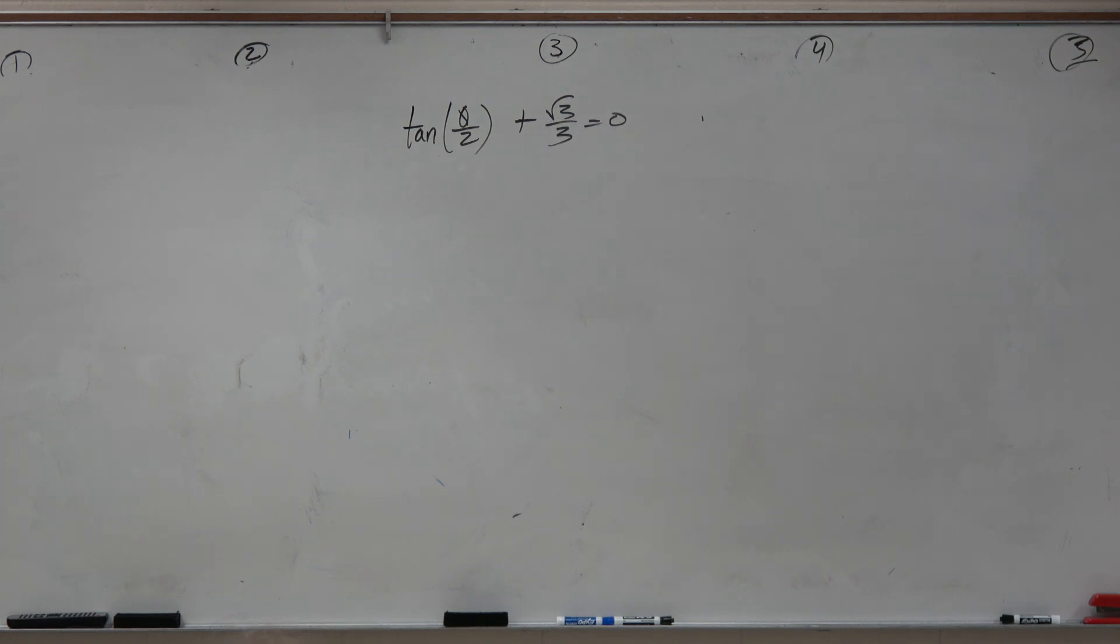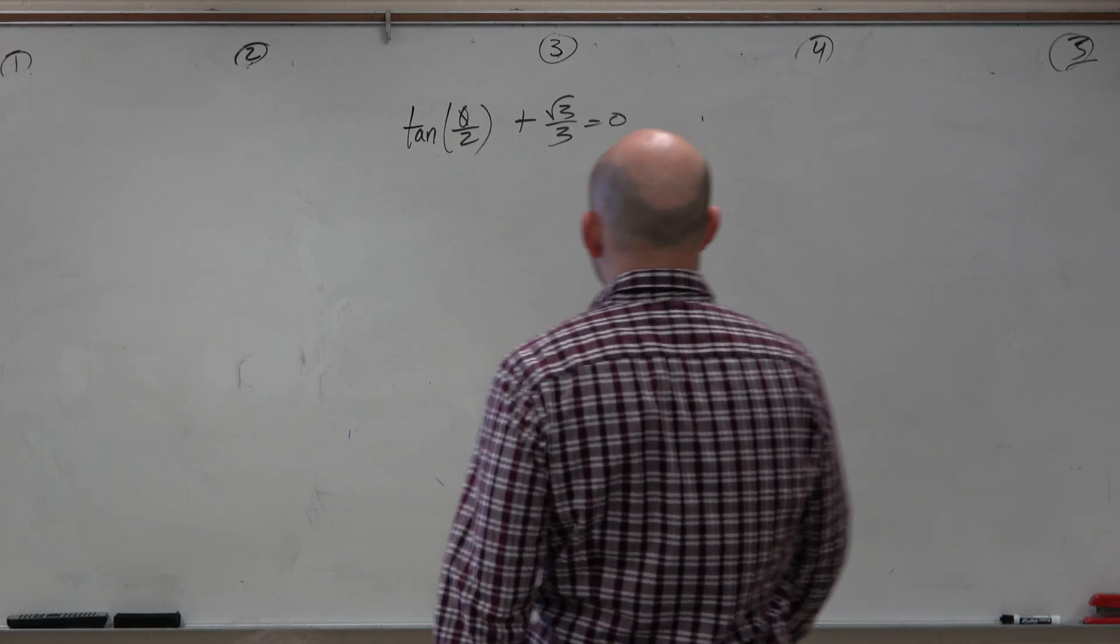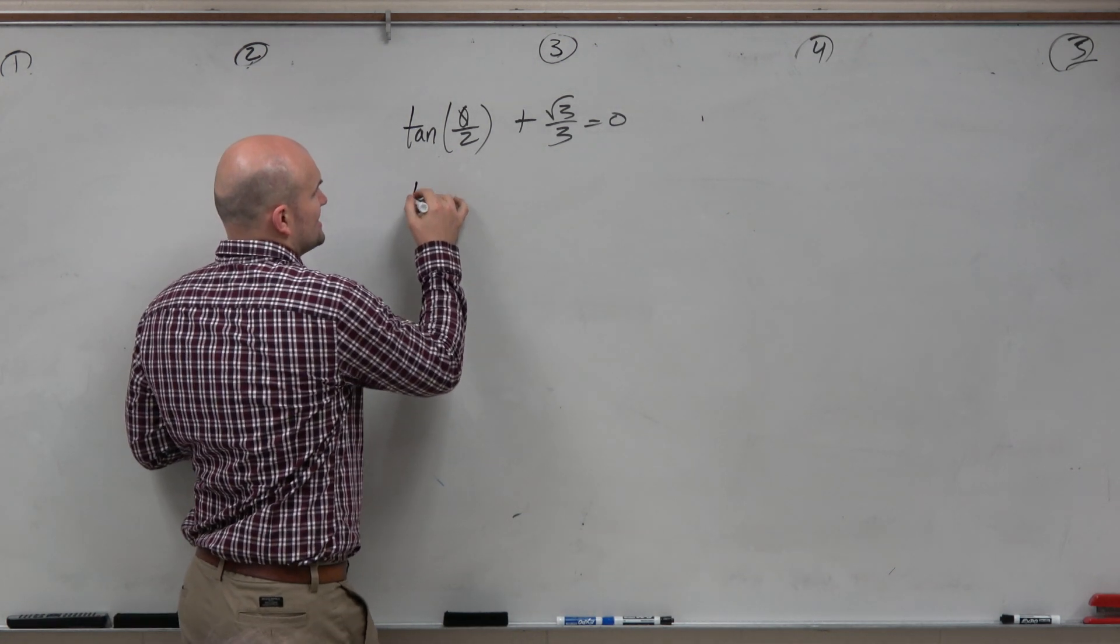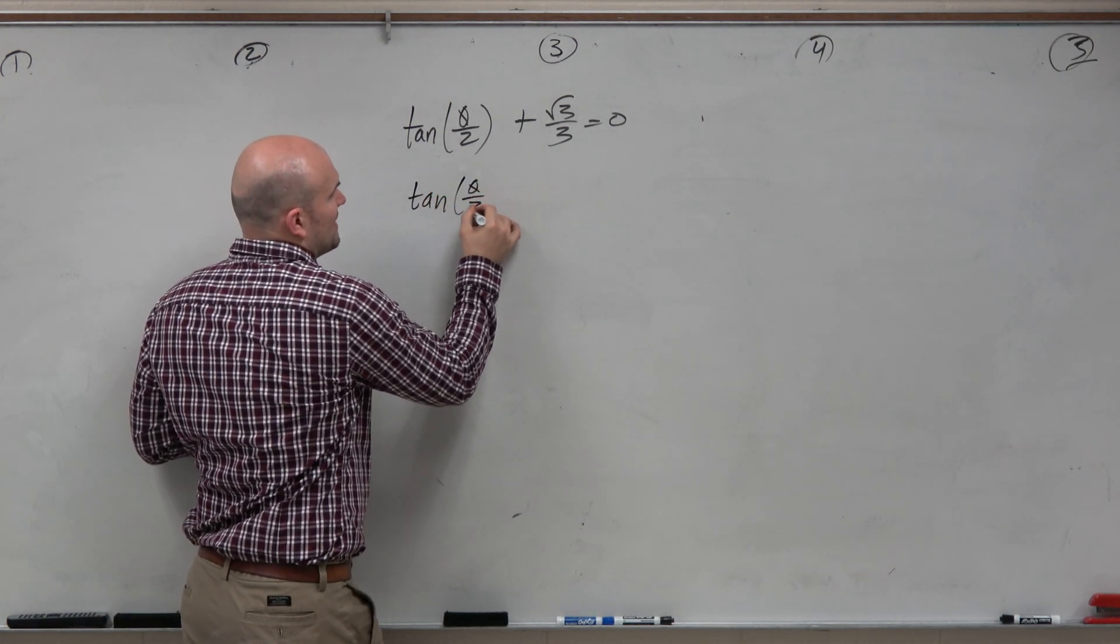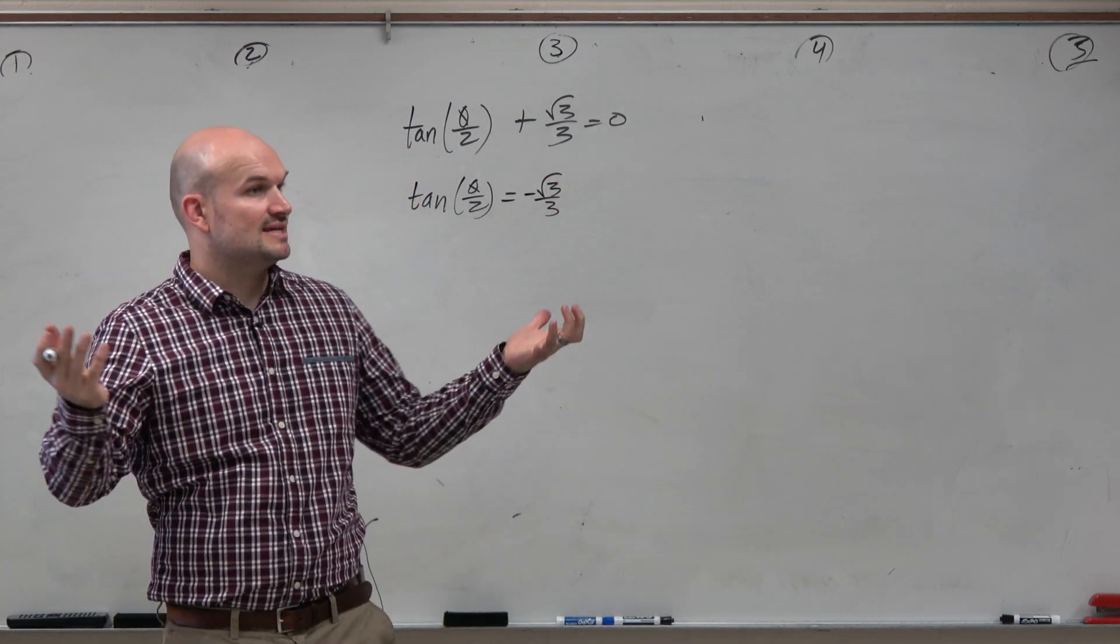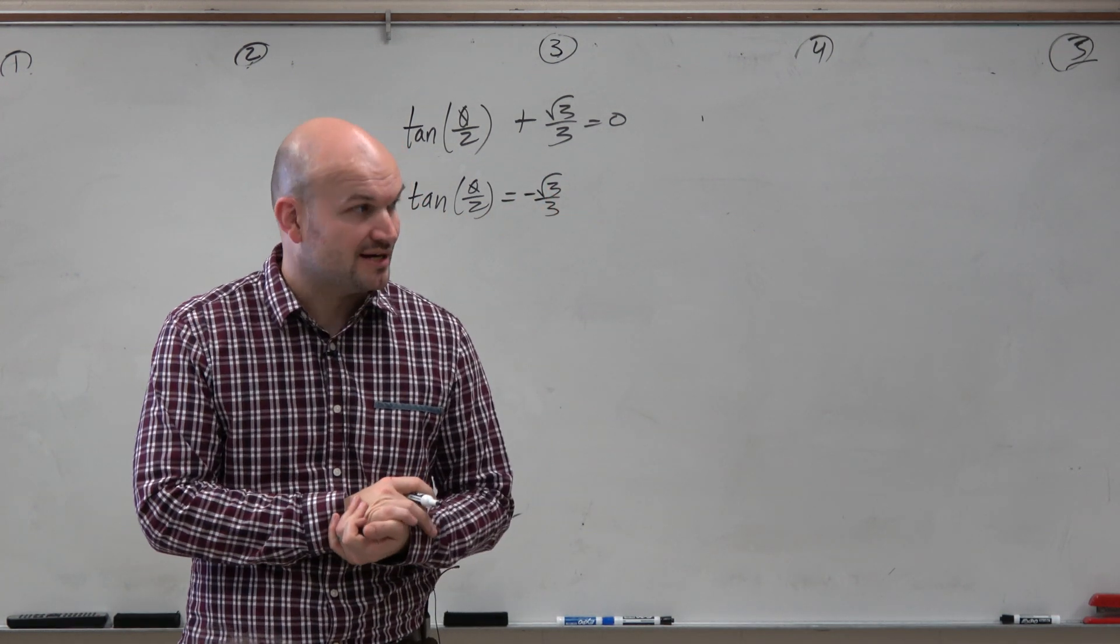Next example, same thing guys. If we have a function that is not isolated, the first thing we want to do is isolate it. So we set tangent of theta divided by 2 equals negative square root of 3 over 3. Now the next thing is my expectation that you know the unit circle by now. Agreed?